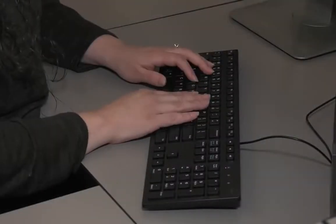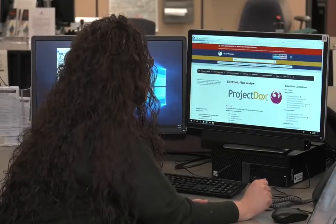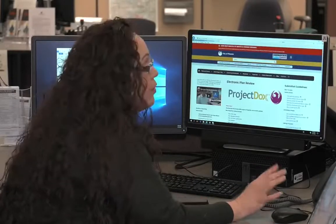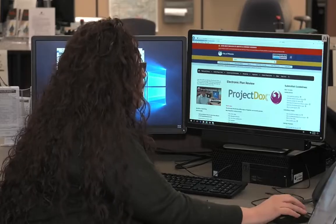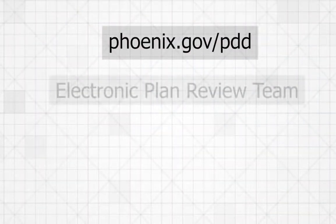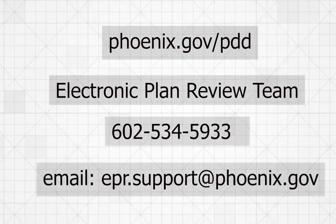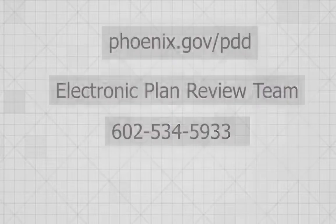These tips will ensure you have a successful and efficient electronic plan review, which gets your project off the ground as soon as possible. If you have questions about EPR, go to our website at phoenix.gov/pdd or you can contact the EPR team at 602-534-5933 or epr.support@phoenix.gov.